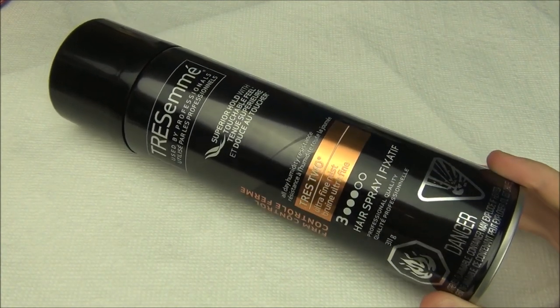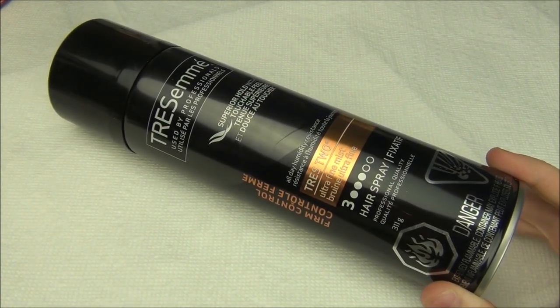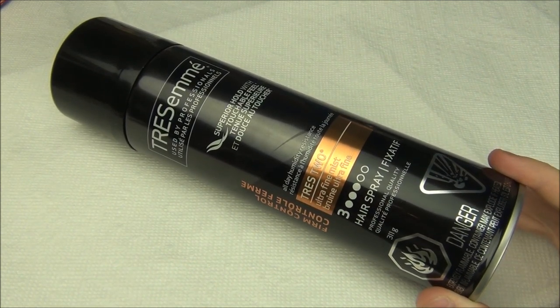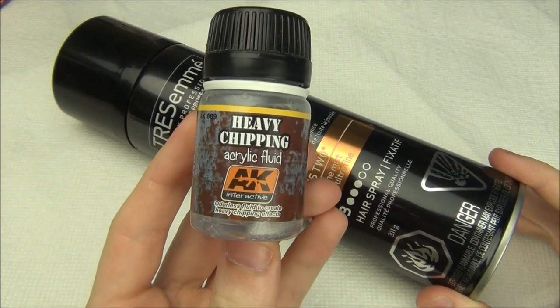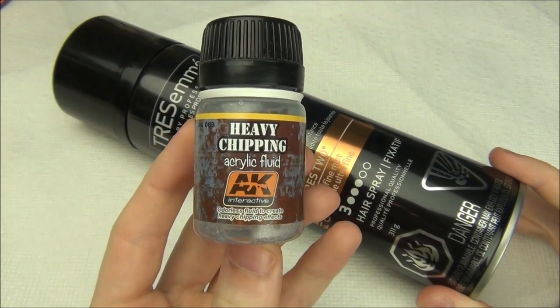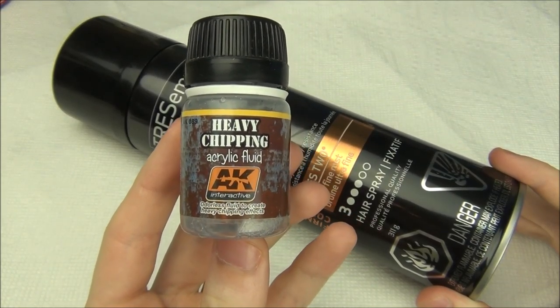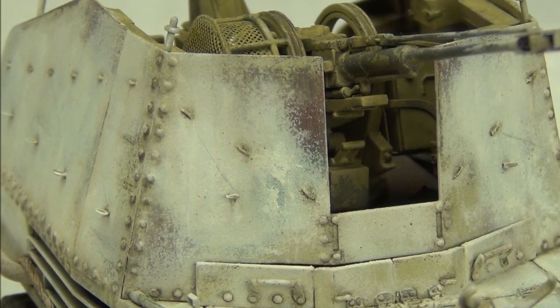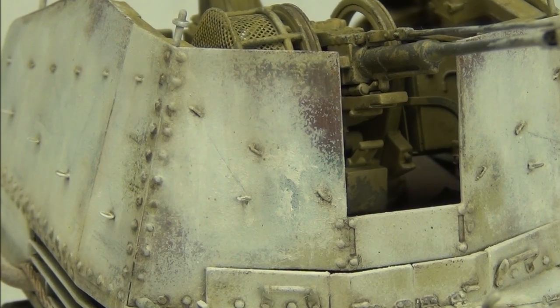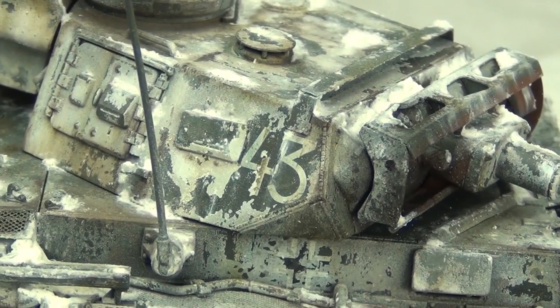The first important product we're going to need is some chipping medium. I'm just going to be using hairspray. This is Tresemme Ultra Fine Mist Firm Control. You could also use chipping fluid, but honestly just more work, more money, and the results aren't as good. I've done a video in the past, which I'll link up in the top right corner here, where I compared the chipping results of hairspray and chipping fluid.